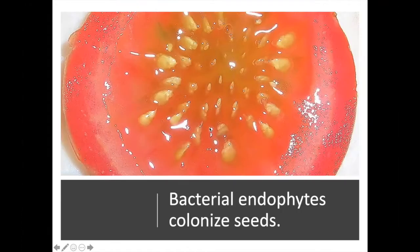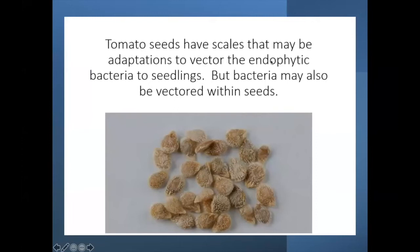Take tomato for example. You might think the inside of a tomato is sterile, but it's not. Tomatoes, especially around the seeds, have a lot of endophytic bacteria. If you take the seeds out, some bacteria are vectored on the surface of the tomato seed, and some are vectored inside the seed itself — those cannot be removed.